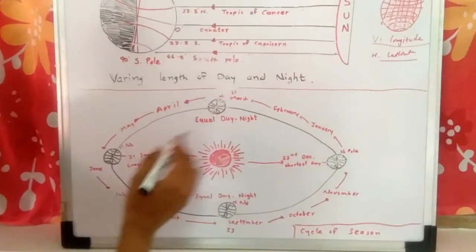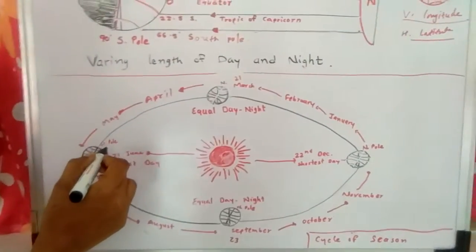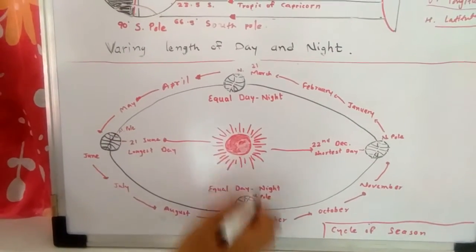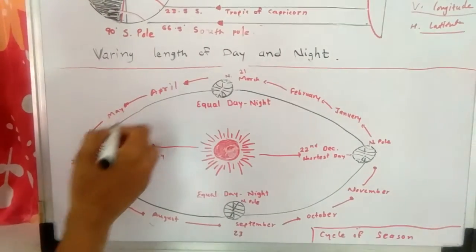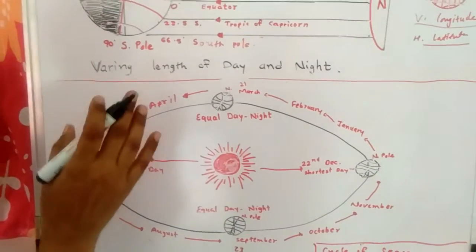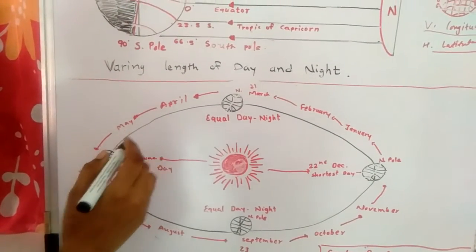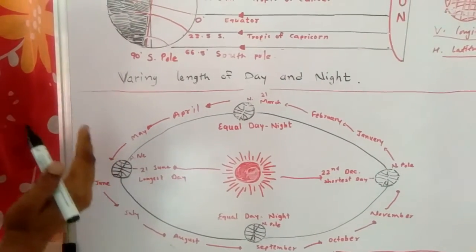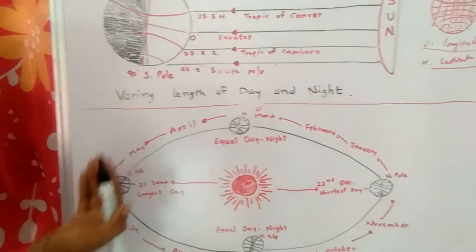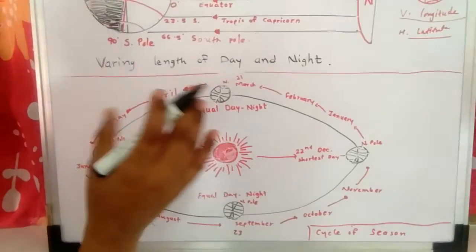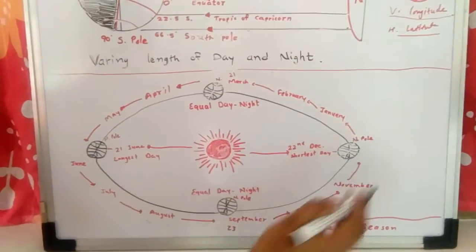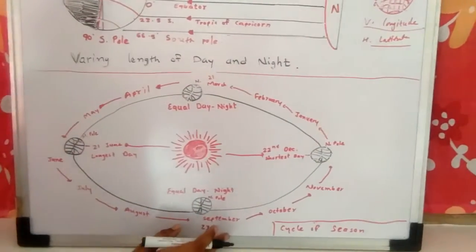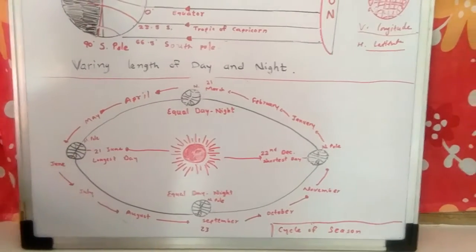Does the Northern Hemisphere experience summer in the period between 21st March to 23rd September? Yes — from 21st March to 23rd September, the Northern Hemisphere has summer. While it is winter in the Southern Hemisphere, because the sunlight does not fall directly there. The change of season is a phenomenon that directly affects human life.